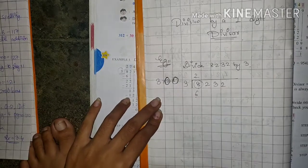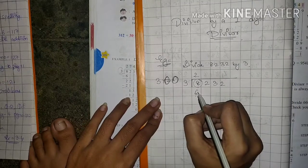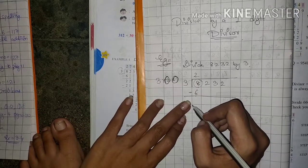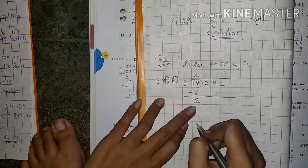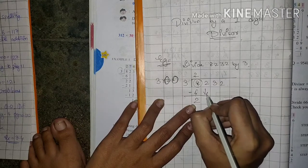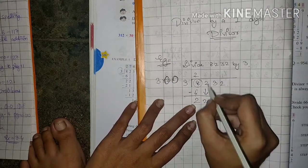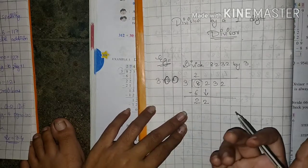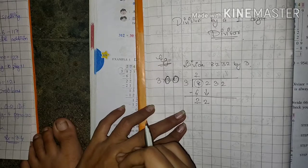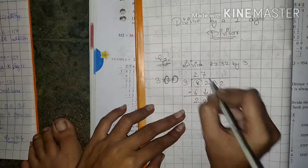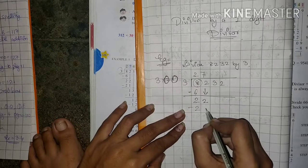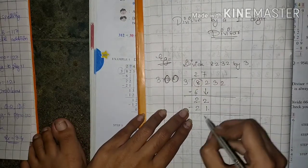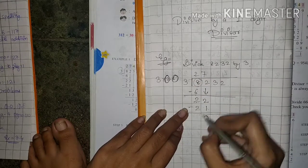Do you understand this? Good. Now, 8 minus 6 — how much is left, students? 2. Now we bring down the 2. We bring down the second number. So 22. In the 3 times table, which number is smaller than 22? 3 sevens are 21. Now 2 minus 1 is 1 remaining.